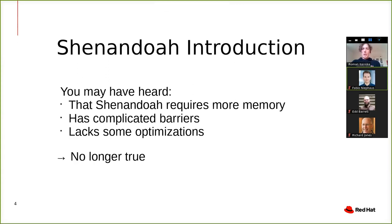You may have already heard of it. It used to be the case that Shenandoah requires more memory in the heap, that it has complicated barriers and is lacking some optimizations. That is no longer true, and I want to tell you why this is the case.